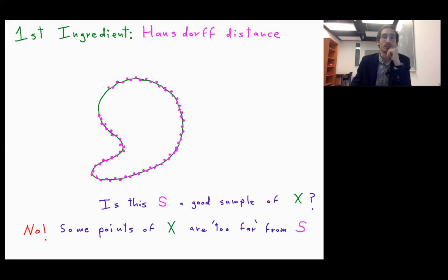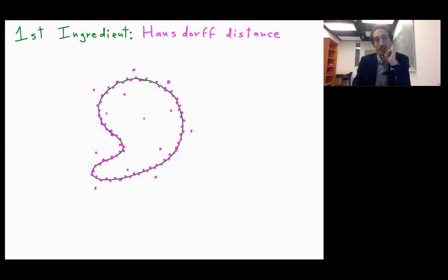Because there are some points of X that are too far from S. We consider another sample S of X and we ask the same question, is this S a good sample of X?